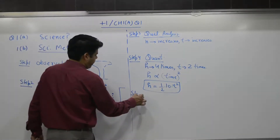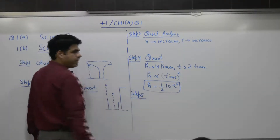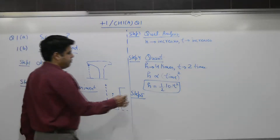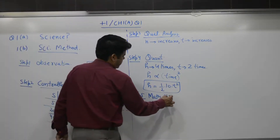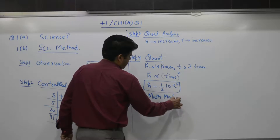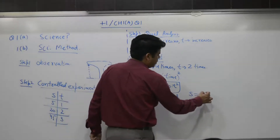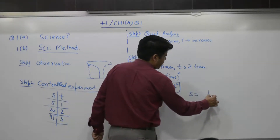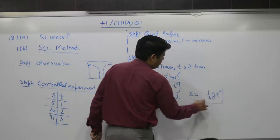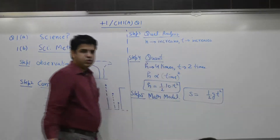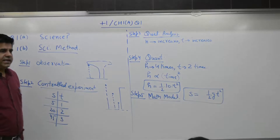Step five: mathematical modeling. The formula is S equals one-half g T squared, or more generally, S equals ut plus half at squared.